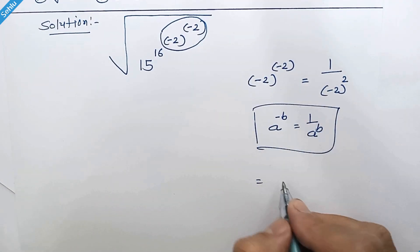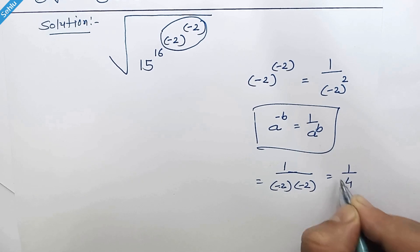So this can be written as 1 over negative 2 times negative 2. Negative negative will be positive, so it will be 1 over 4.